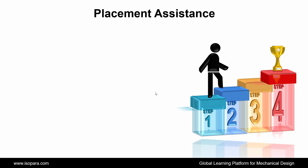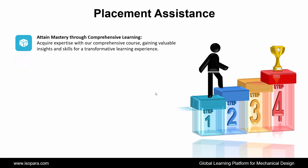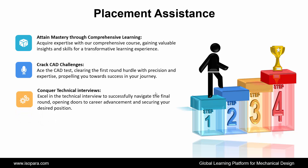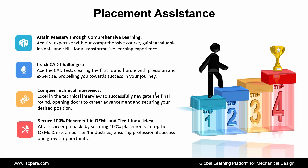Now we see Placement Assistance. ISOPARA's Placement Assistance works in four steps. First is attaining mastery through comprehensive learning — acquire expertise with our comprehensive course, gaining valuable insights and skills. Second is Crack CAT Challenges — ace the CAT test, clearing the first round hurdle with precision and expertise, propelling you towards success. Third is Conquer Technical Interviews — excel in the technical interview to successfully navigate the final round, opening doors to career advancement. And fourth is Secure 100% Placement in OEMs and Tier 1 industries, attaining career pinnacle by securing placements in top-tier OEMs and esteemed Tier 1 industries, ensuring professional success and growth opportunities.